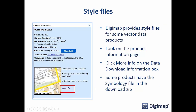We provide style files for some vector data products — either SLD files, which work in any open source GIS software, or QML files, which only work in QGIS but are used when the styling is too complex for a simple SLD. The geology data will be shipped with QML files for this reason. Check the zip file that comes with your data, or go to the product page via the 'more info' link in data download, or check the help pages for links to Ordnance Survey's styling files.